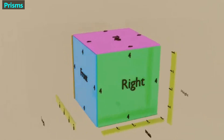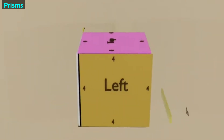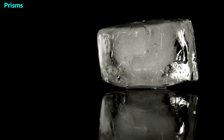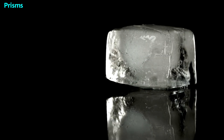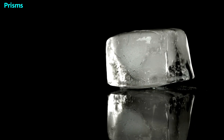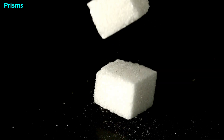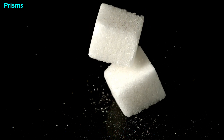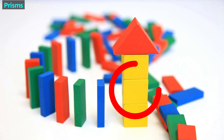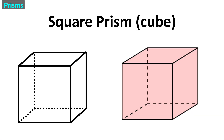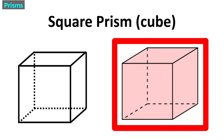This is a square prism — it gets that name because both of its bases are squares. One of the most famous examples of a square prism is a cube, in which case the faces between the bases are also squares. Ice cubes and sugar cubes get their names because of this shape. A familiar example of a square prism are these yellow wooden blocks. This is how a square prism might look on a test; the one on the right is from a state exam question.